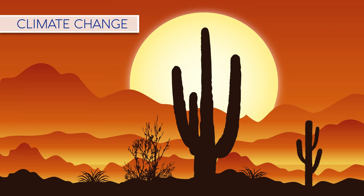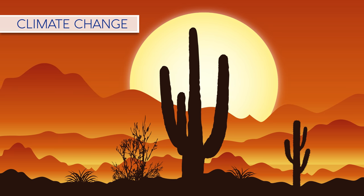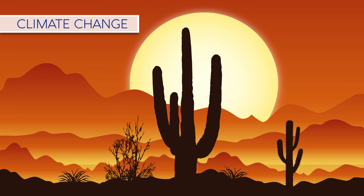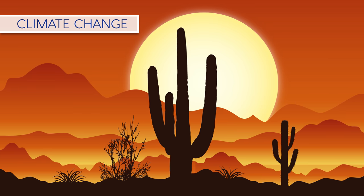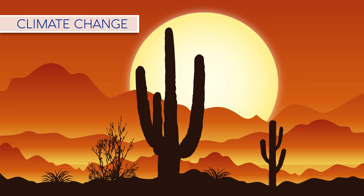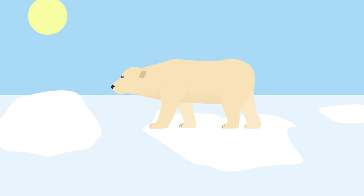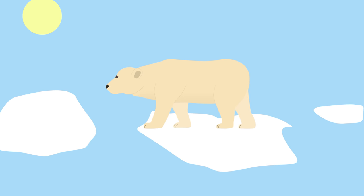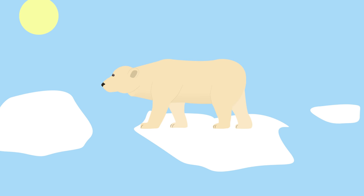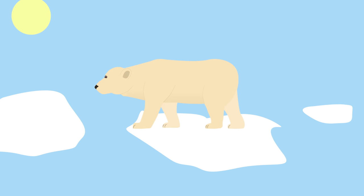Throughout the Earth's history there have been periods of rapid climate change that have led to mass extinction events. We are currently in a period of fluctuating climate, but nearly all scientists agree that human activities like burning fossil fuels are speeding up global warming. We don't know how much climate change is going to affect biodiversity in the future, but it is predicted to be huge. Loss of sea ice and ocean acidification are already causing huge reductions in biodiversity. Climate change alters temperature and weather patterns, with changing patterns of rainfall and drought expected to have significant impacts on biodiversity.